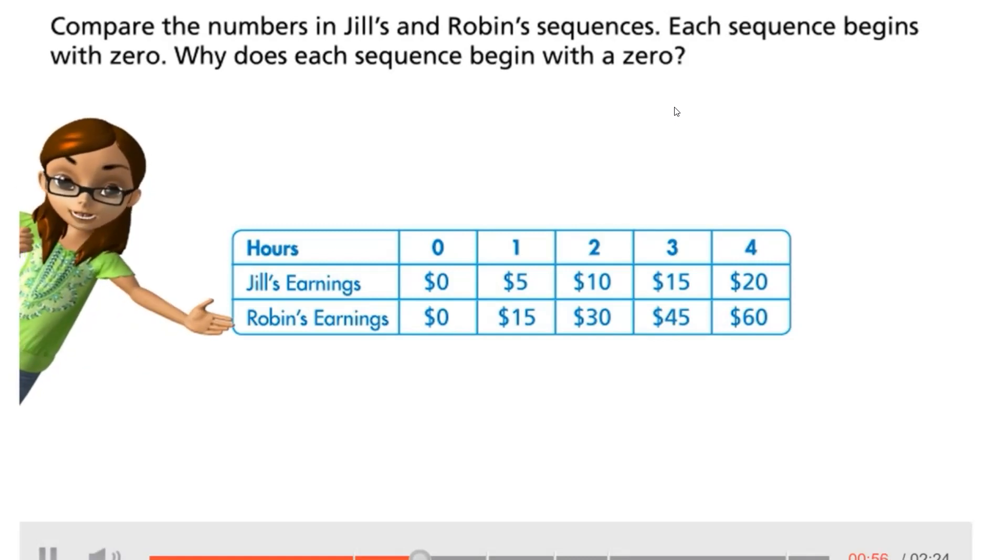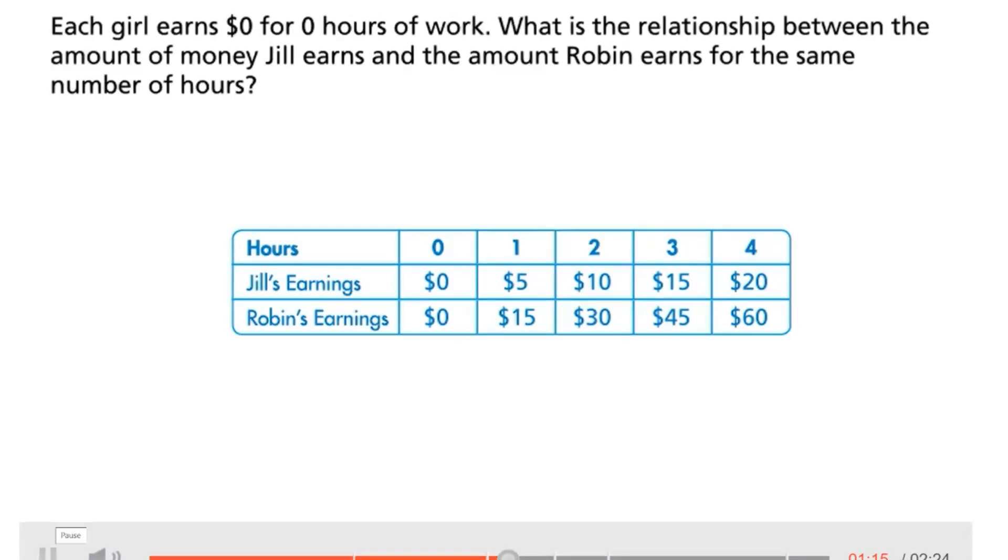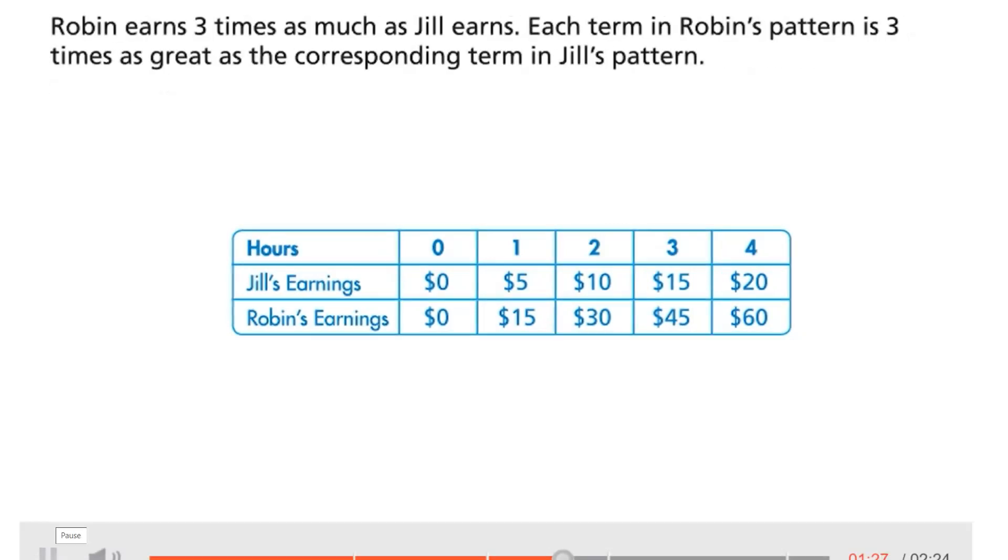You can look for a relationship between the corresponding terms in the patterns. Compare the numbers in Jill's and Robin's sequences. Each sequence begins with zero. Why does each sequence begin with a zero? Each girl earns zero dollars for zero hours of work. What is the relationship between the amount of money Jill earns and the amount Robin earns for the same number of hours? Robin earns three times as much as Jill earns.